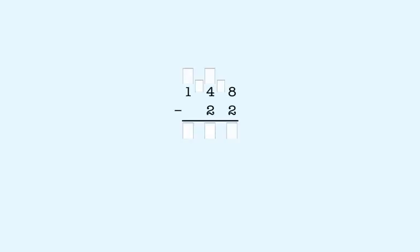Another example: 148 minus 22. We start subtracting in the ones place. 8 is bigger than 2, so we don't need to take a 10. 8 minus 2 is 6. So we put 6 in the ones place in the answer.